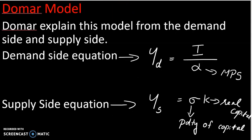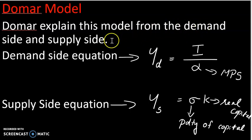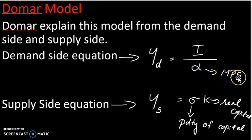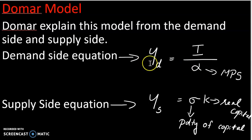Now, what is the Domar model? Domar's model has two equations: a demand side and a supply side. The demand side uses the Keynesian approach, and the supply side uses the classical approach. The demand side equation is: YD equals I divided by alpha, where YD is effective demand, I is net investment, and alpha is the marginal propensity to saving.